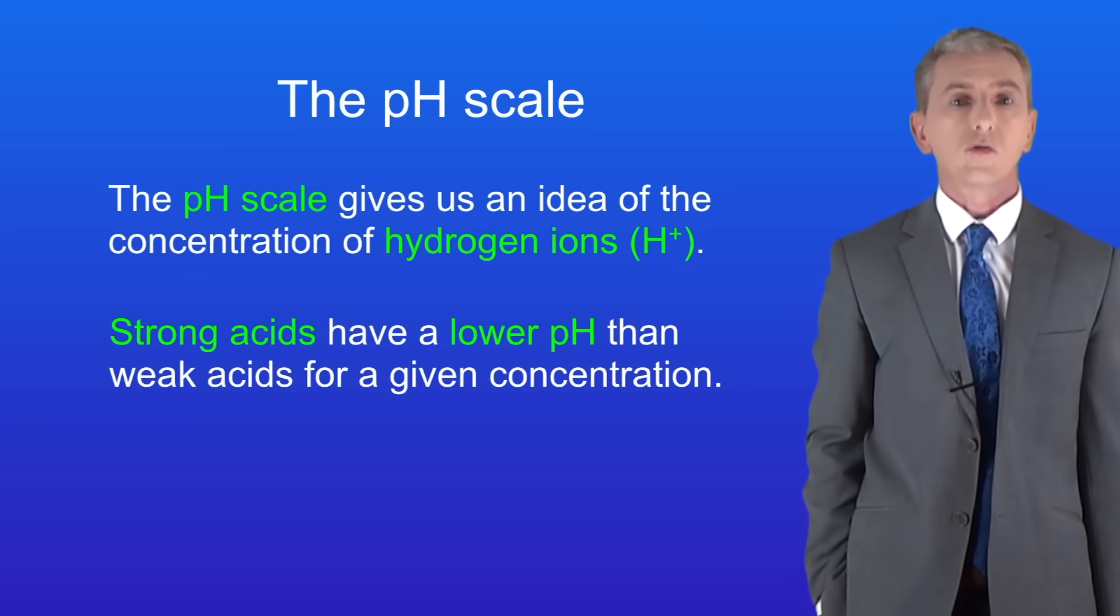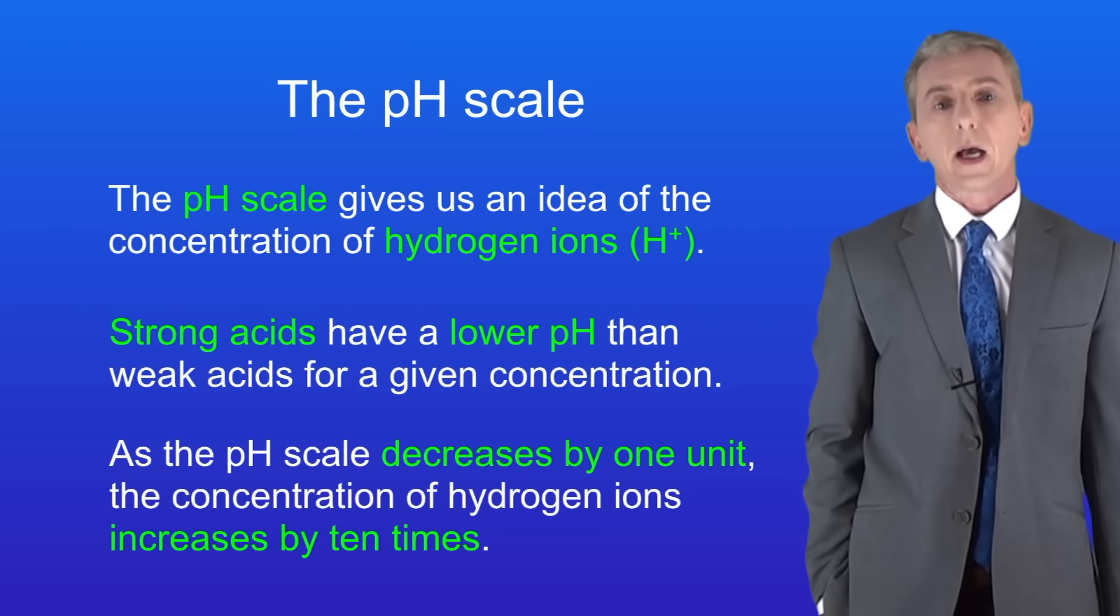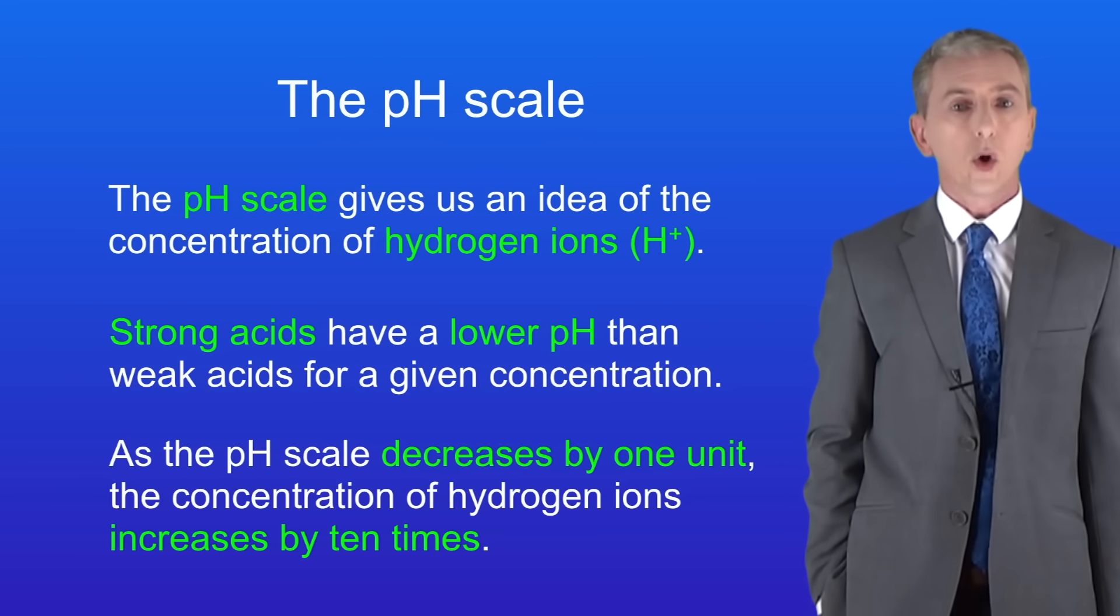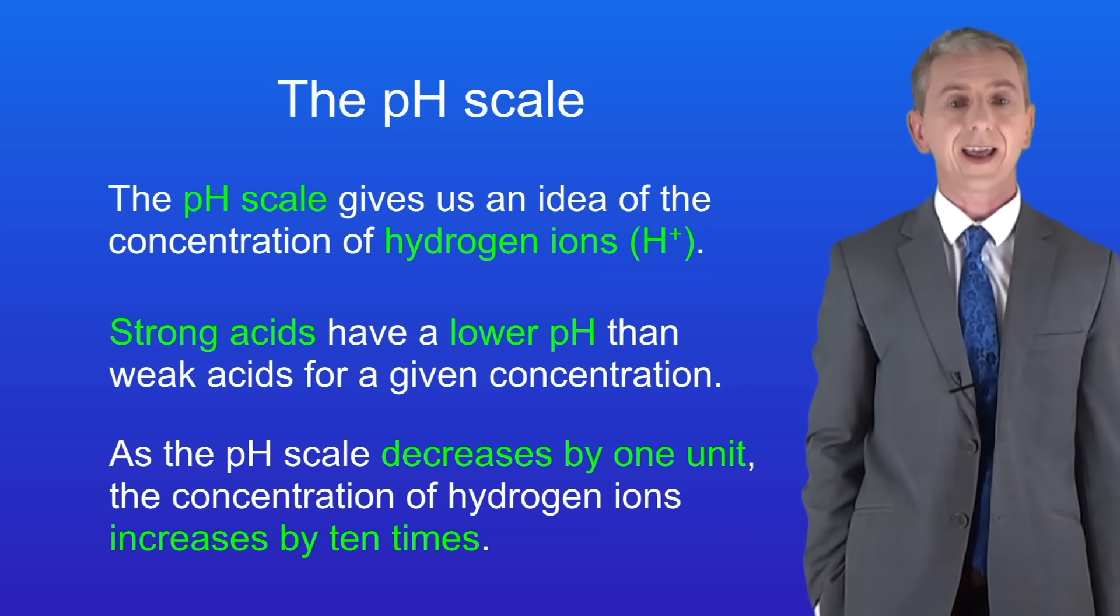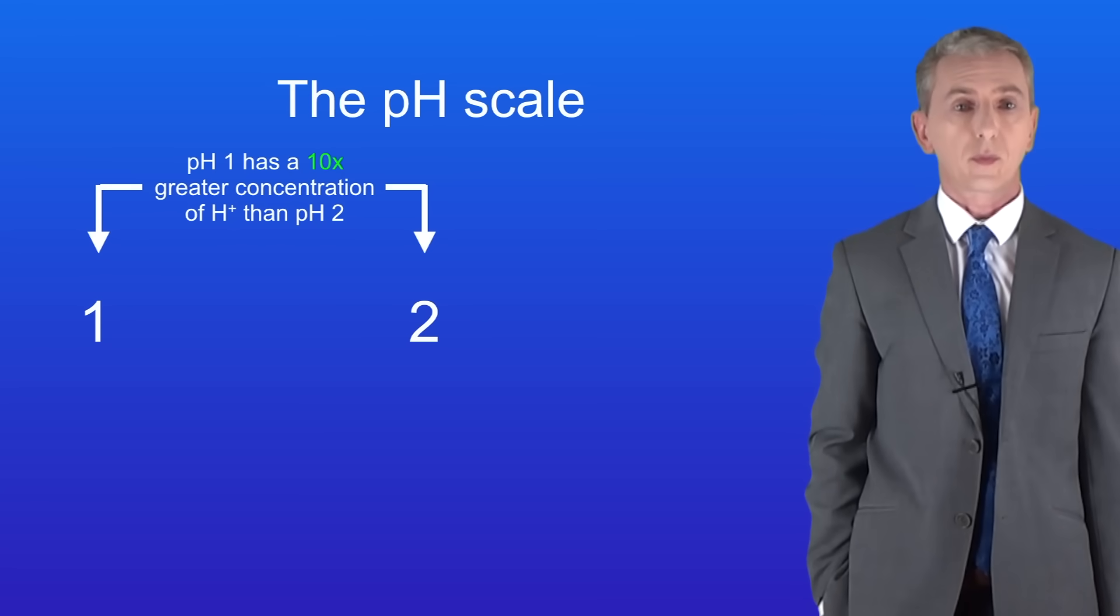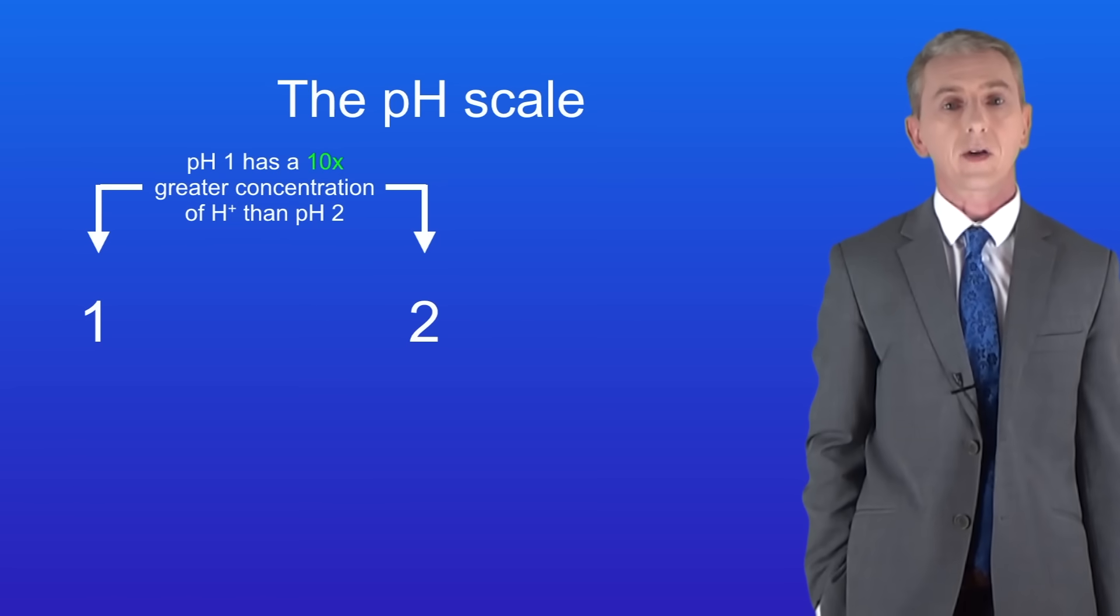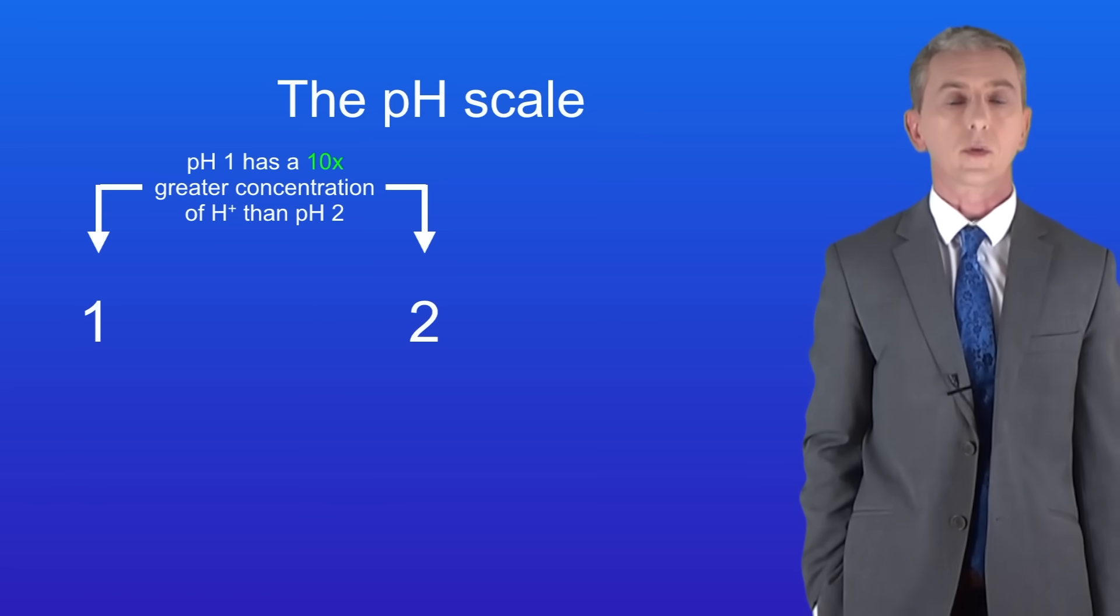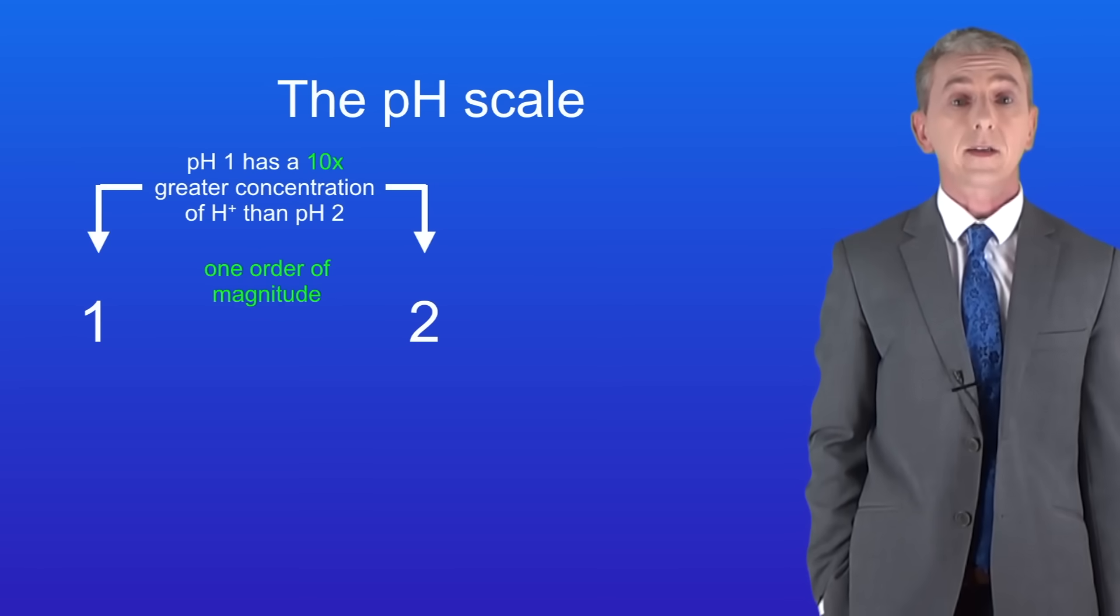Now this brings us to a really important point about the pH scale. As the pH scale decreases by one unit, the concentration of hydrogen ions increases by 10 times. If we compare pH 1 with pH 2, we can see that pH 1 has a 10 times greater concentration of hydrogen ions than pH 2. Scientists call a 10 times difference one order of magnitude.